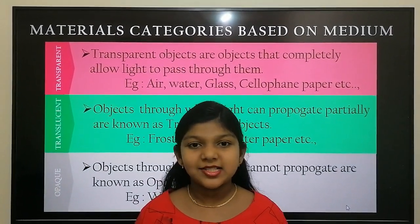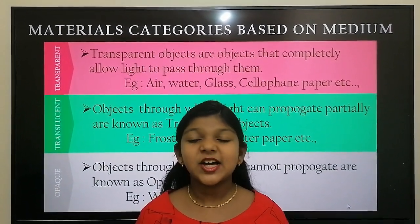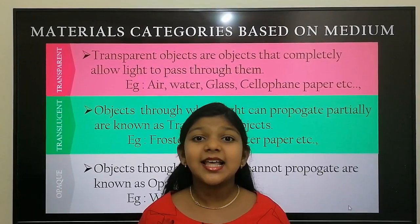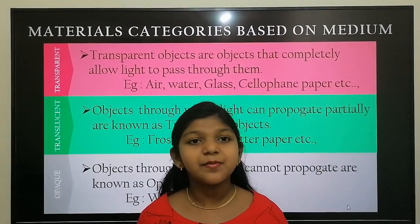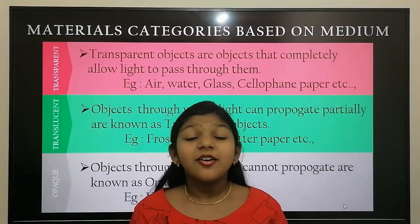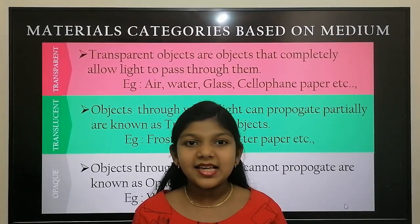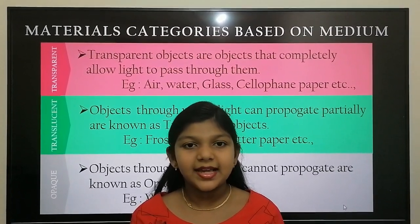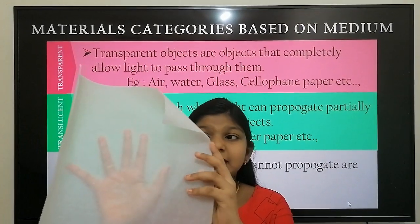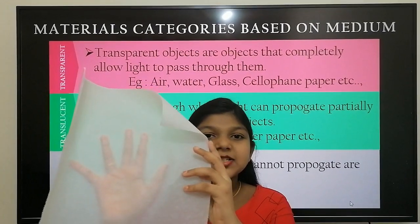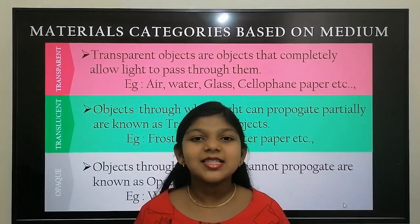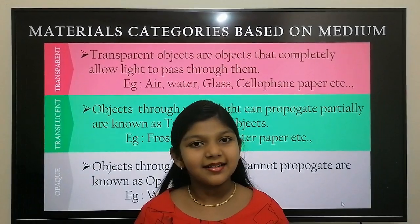Next we are going to see about translucent objects or translucent materials. The objects that allow light to propagate partially are known as translucent. For example, ice, frosted glass, butter paper, etc. Here I have taken this butter paper. Can you see my hand clearly? No, you cannot see my hand clearly.